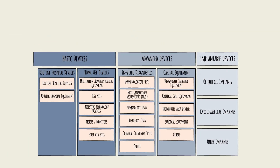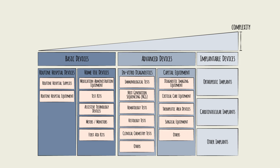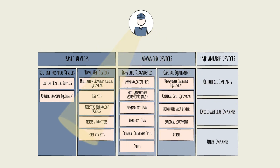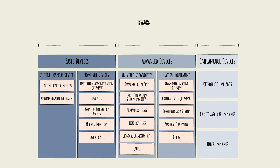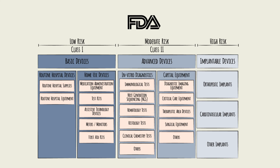As you go from basic to advanced to implantable device types, medical devices generally increase in complexity. The three complexity levels also reflect the threshold of controls required by regulatory bodies before a device can be brought to market. Most regulatory bodies use three or four tiers to classify device types according to their risk level or potential to cause injury to patients. For example, the Food and Drug Administration (FDA), the regulatory body in the U.S., groups devices into three risk-based tiers — class 1, class 2, and class 3 — which can be roughly matched to basic, advanced, and implantable devices, respectively.